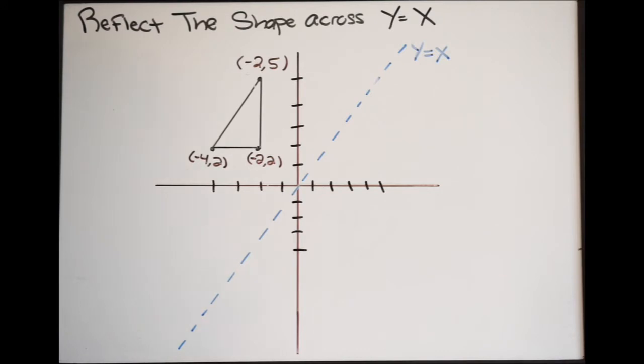This is fairly straightforward. Whenever you want to reflect a point or points across the line y equals x, you're simply making the x y and the y x of your point. For example, if I look at my point here which is negative 2 comma 5, to reflect this point across the line y equals x, I make the x y and the y x. So my new point will be 5 comma negative 2.